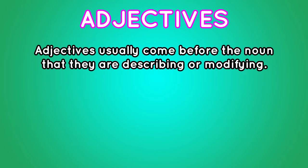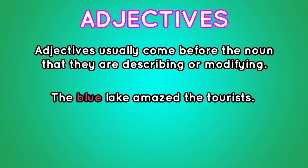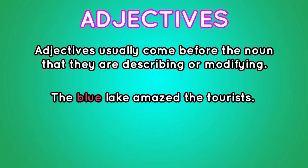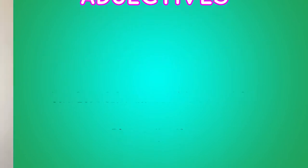Now let's move to adjectives. What are adjectives? Adjectives are words that provide information like qualities by describing nouns and pronouns. They are also called describing words or modifiers. Adjectives usually come before the noun that they are describing or modifying. For example: "The blue lake amazed the tourists." The word blue is telling us information about the lake. Colors, numbers, some pronouns, and even nouns can become adjectives.